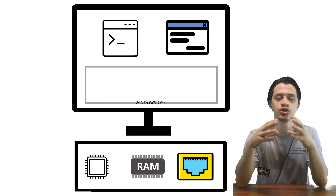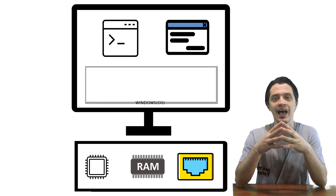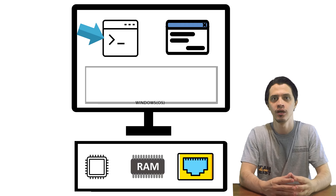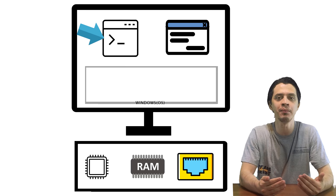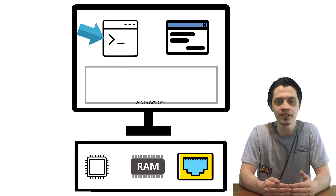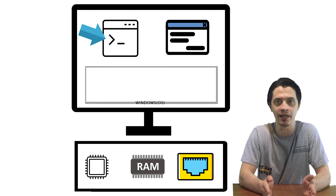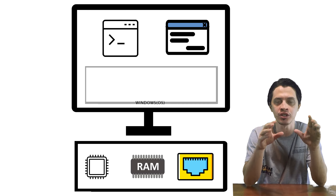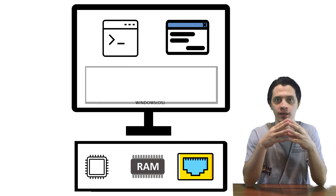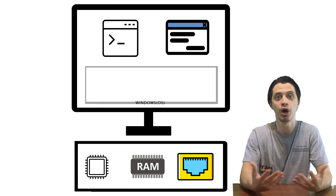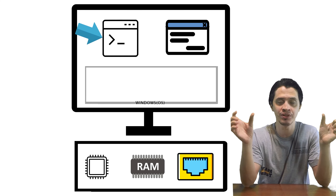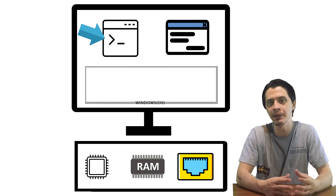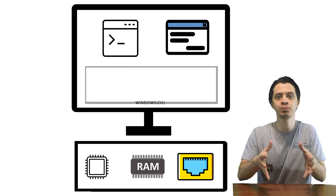Each of these two applications are running within their own space and memory allocated by the operating system to their processes. Now, if inside a single application — for example, the left application — the building blocks and structures want to communicate and share stuff, they could easily do so because they are inside the same process and the same memory. For instance, in a Java or C application, two classes or two functions that want to call each other and pass data could easily do so using their language's capabilities.